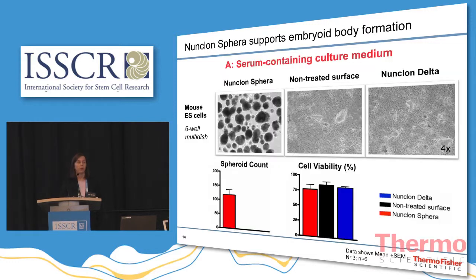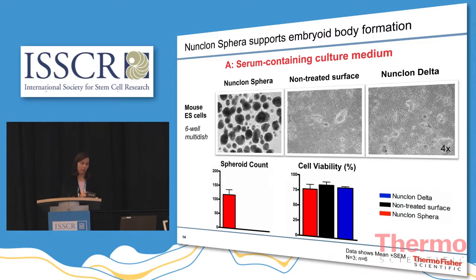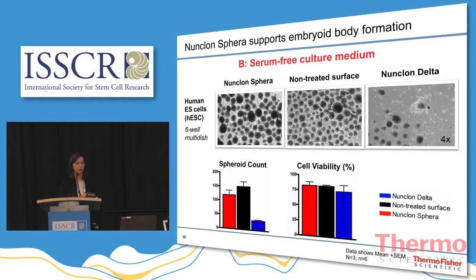We then extended our studies using both mouse and human embryonic stem cells. We set up embryoid bodies from mouse embryonic stem cells by plating 60,000 cells per well of a six-well plate. Across the three culture surfaces, only the Nunclone Sphere surface was able to support embryoid body formation, because serum was present in the culture medium. Cell viability across the three cultures remained very comparable. We then repeated these experiments using human embryonic stem cells. We saw cell attachment and signs of substrate-mediated differentiation on the Nunclone Delta surface, but both the Nunclone Sphere surface and the non-treated surface were able to support EB formation. In this instance, the non-treated surface worked since there was no serum in the culture medium.